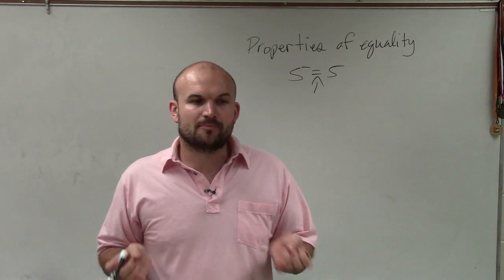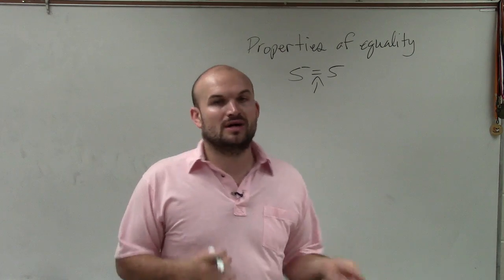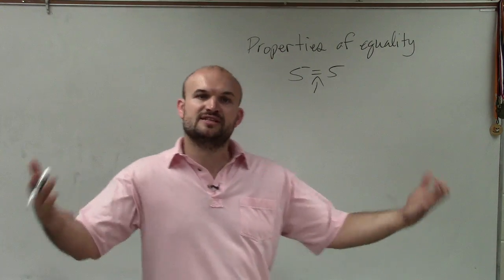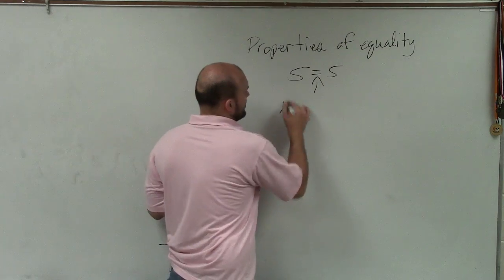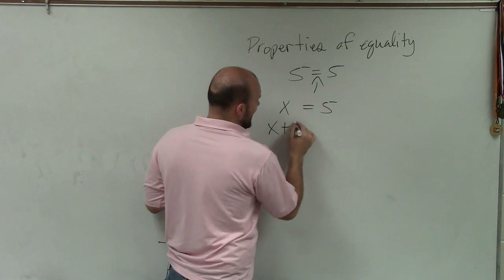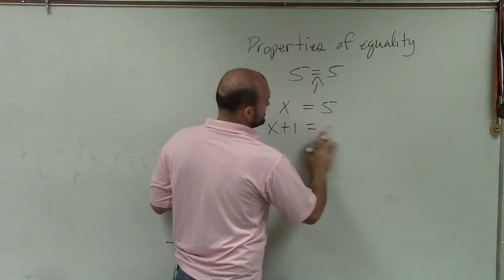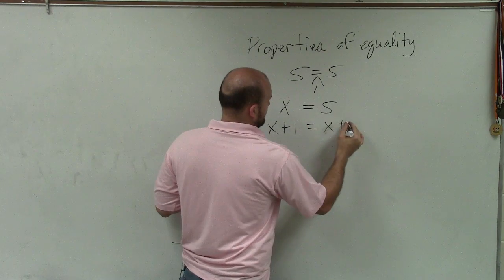So when we're using the properties of equality, what the properties of equality allow us to do is to create equivalent equations. And I talked about equivalent equations, and let's say I say x is equal to 5. Well, if I add one to both sides, what am I doing?